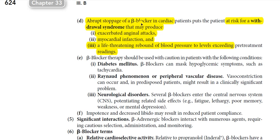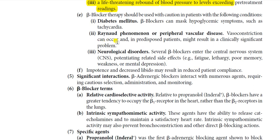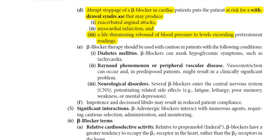To reduce these excessive upregulated receptors, the dose of beta blocker must be gradually tapered — not stopped abruptly. The dose should be reduced gradually and then the drug discontinued. This tapering is an important precaution and monitoring consideration when stopping beta blocker therapy.